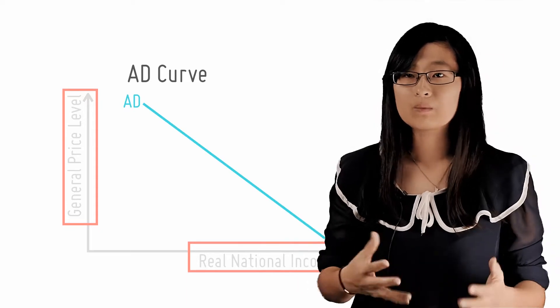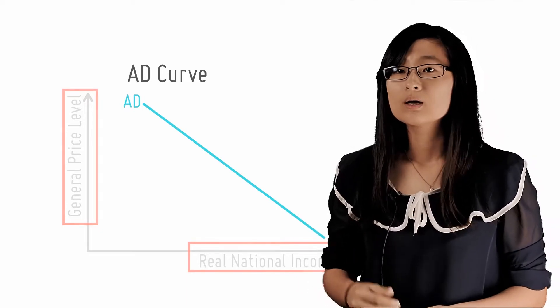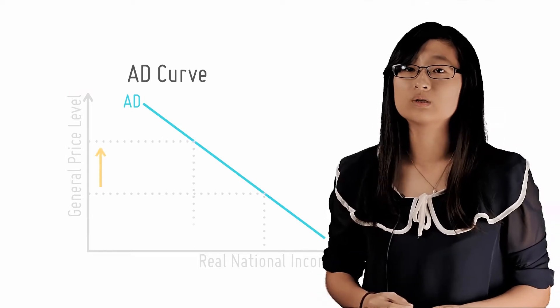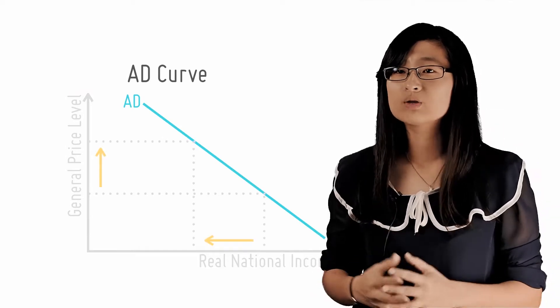Ceteris paribus or keeping all other factors constant, the higher the general price level, the lower the quantity of goods and services demanded. And there are several reasons for this.